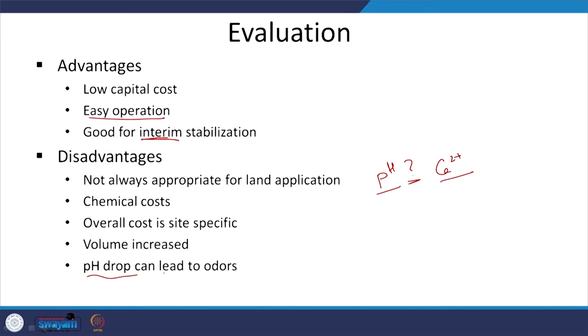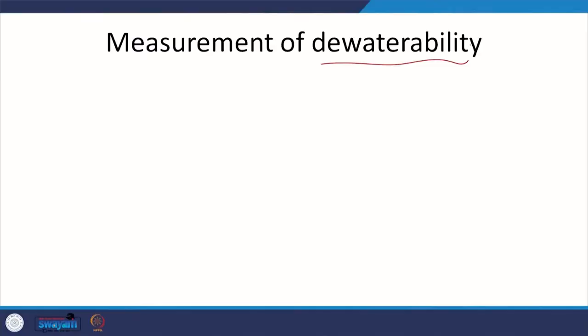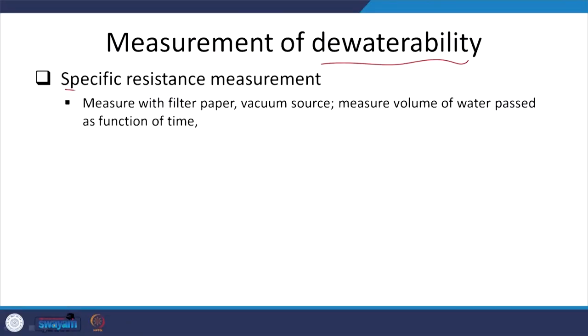Moving to conditioning: after increasing solids concentration and stabilization where biodegradable content and most pathogens are addressed, we need conditioning to prepare for dewatering. Conditioning is about improving dewaterability by addition of relevant cations or polymers — similar to coagulation and flocculation. To measure dewaterability I look at specific resistance. I use a filter paper, pull the sludge through with a vacuum source, and measure the volume of water passing through as a function of time.